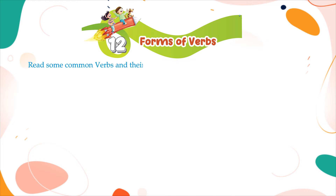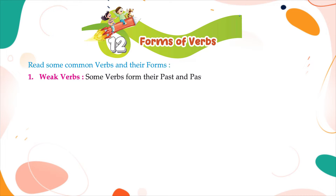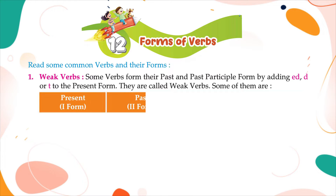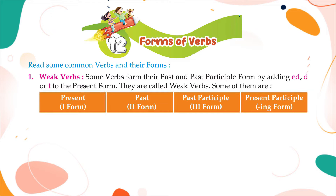Read some common verbs and their forms. Weak verbs: some verbs form the past and past participle form by adding -ed, -d, or -t to the present form. They are called weak verbs. The columns are: present (first form), past (second form), past participle (third form), present participle (ing form).